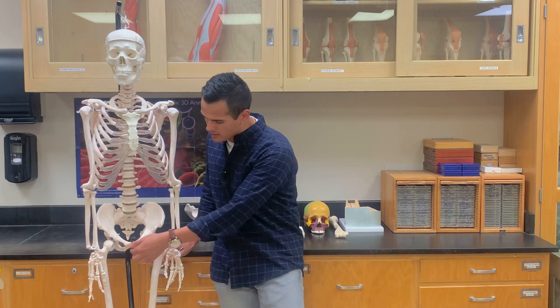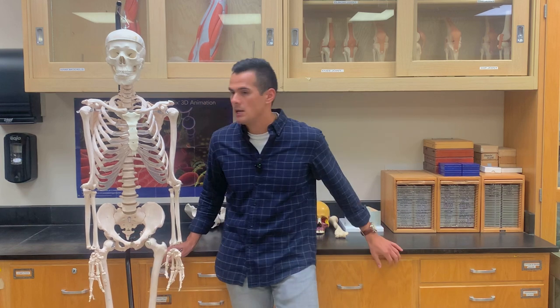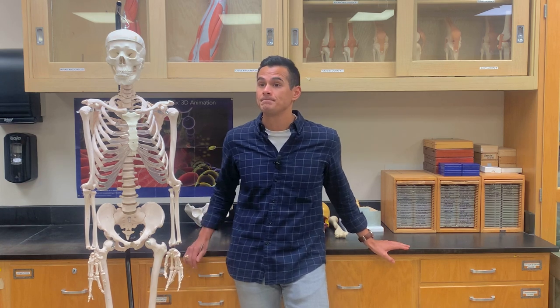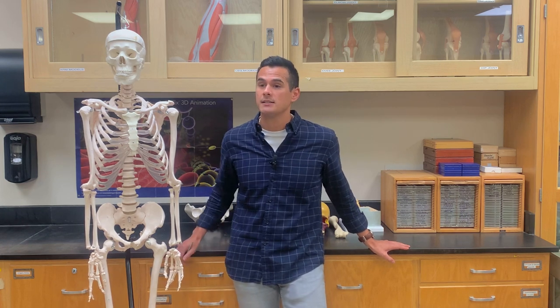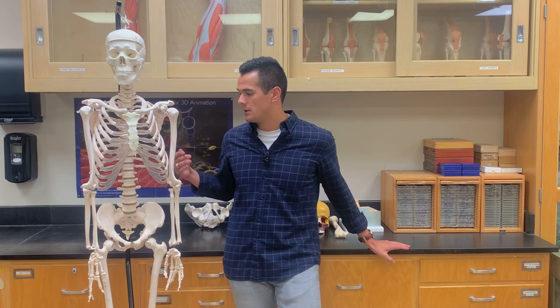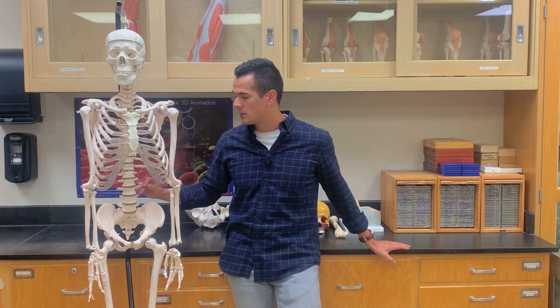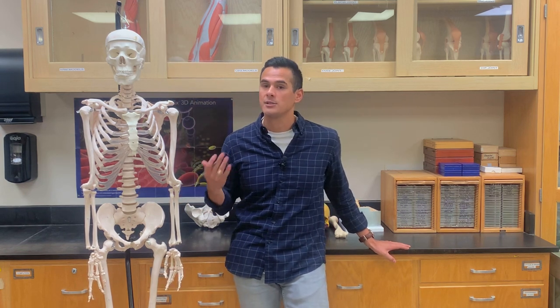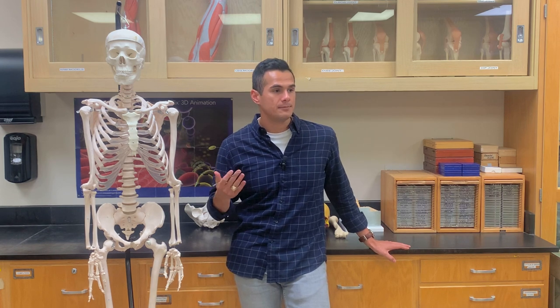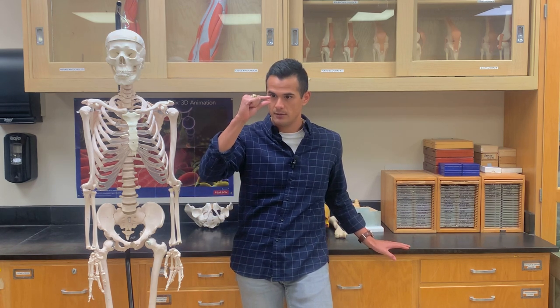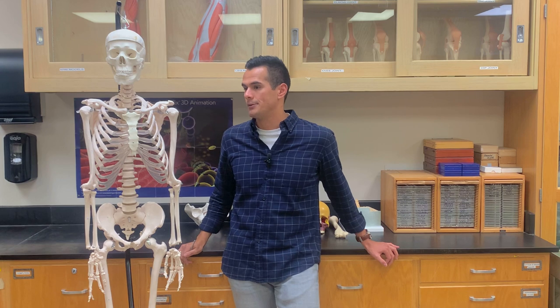Fibrocartilage is also found at the pubic symphysis. The function of fibrocartilage is shock absorption — that's why they're found between each of the vertebrae, absorbing the force of gravity. Another thing about the intervertebral discs is that as we get older, they start to degenerate and get thinner, which is why we start to shrink and aren't as tall as we used to be.